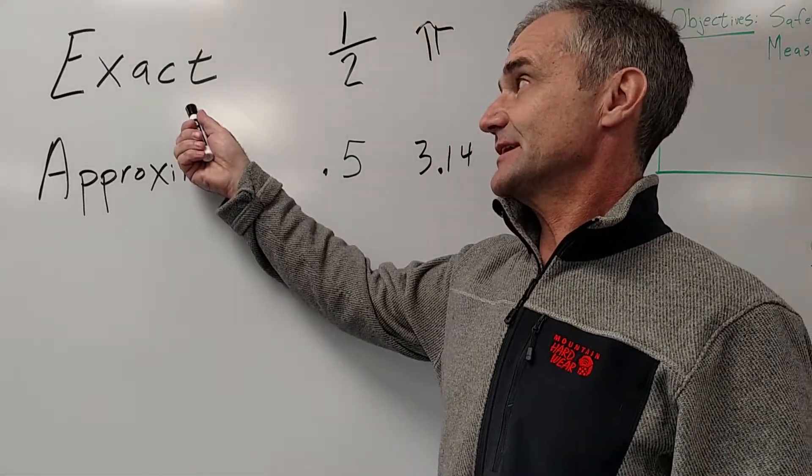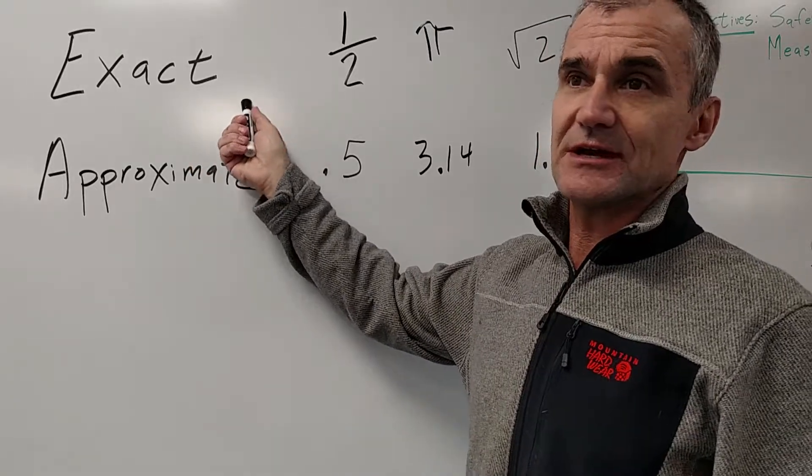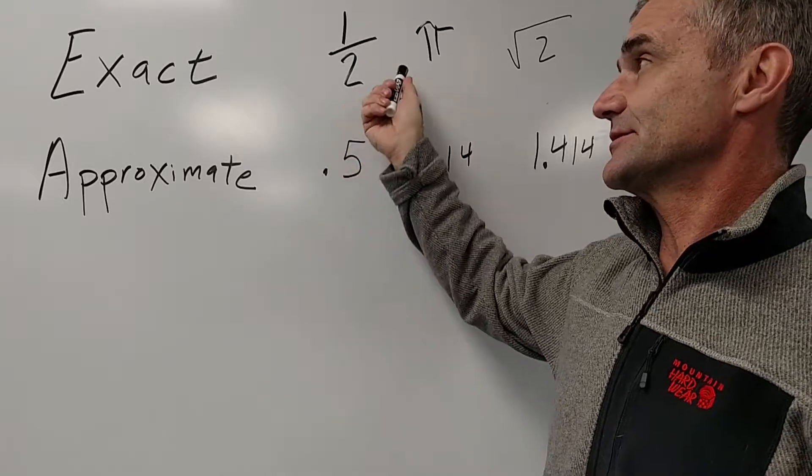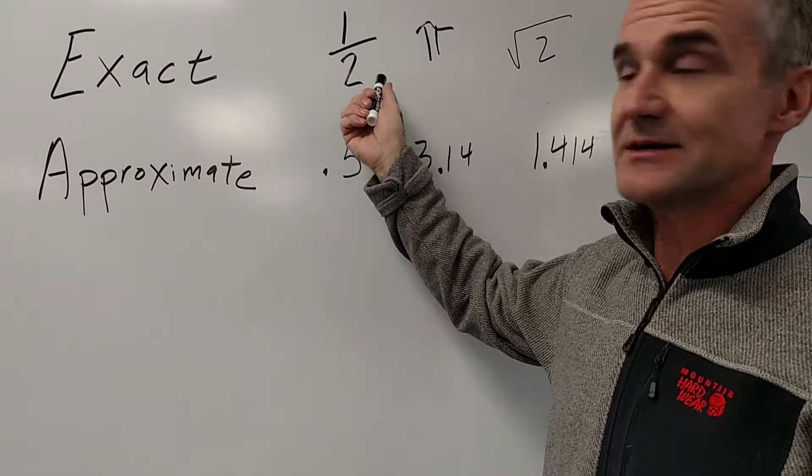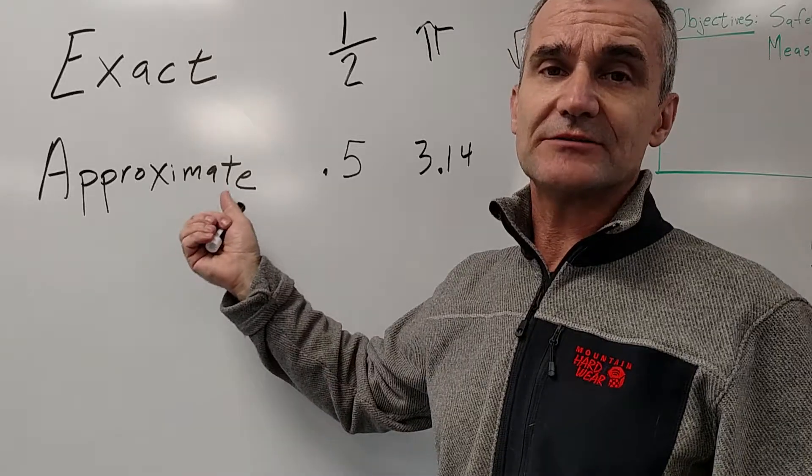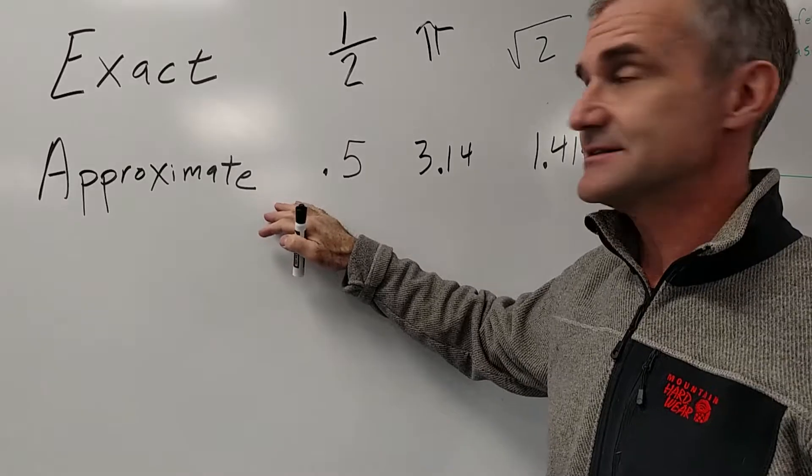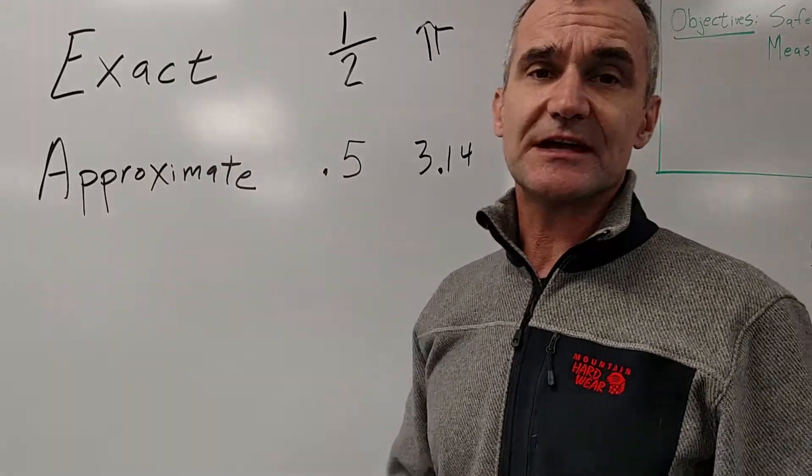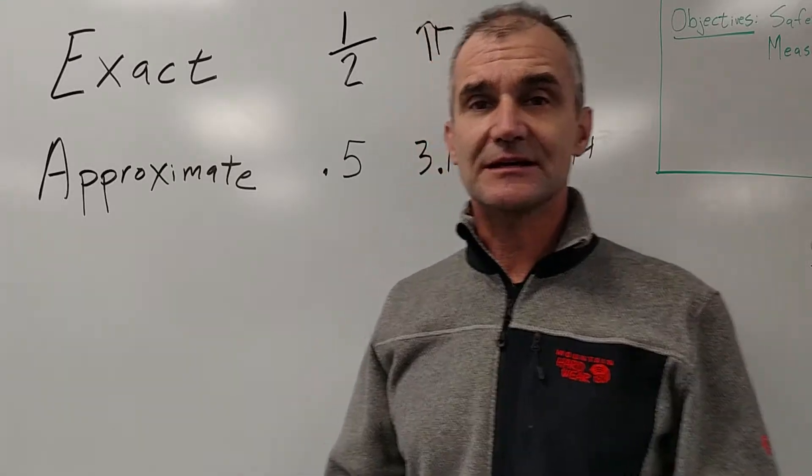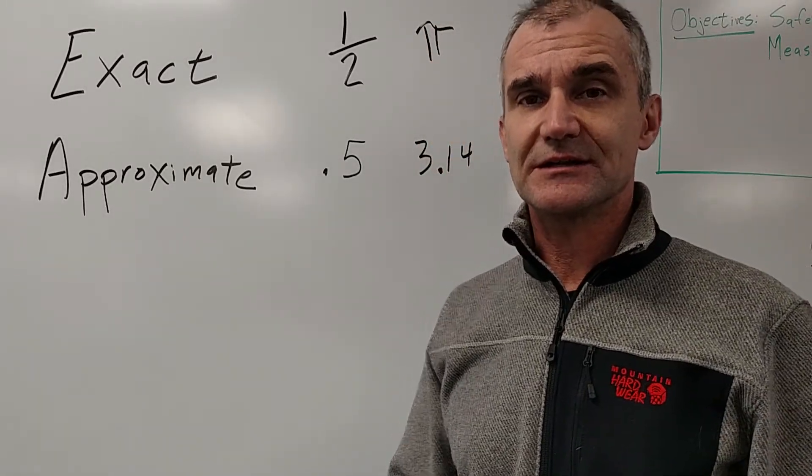So exact value, again, you're not using a calculator at all. You're just taking the actual number, or the letter that represents the number. Approximate, you've entered it in your calculator and you've rounded. So approximate value means decimal approximation. Exact value means without a calculator. It's a big idea in math, and in science, and in making. Hopefully that helps, explaining what exact and approximate is all about.